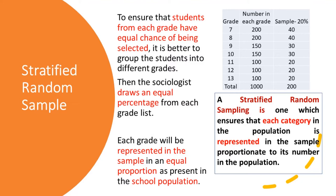Let's take the example of this school again, grade 7 to grade 13, with 200, 200, 150, and 100 students in different grades. If we place the names of each grade in a separate box and decide that we need 20% of this population as part of our sample, we take 20% of 200, that is 40; 20% of 150, that is 30; 20% of 100, that is 20. At the end you will have a sample of 200 with 20% from each grade.